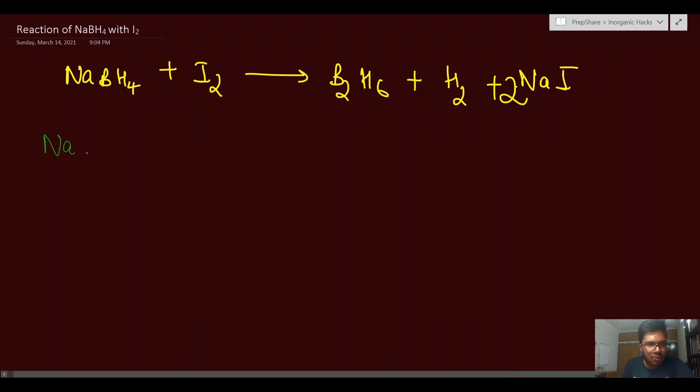This is the reaction. We will analyze NaBH4 first. NaBH4 is an ionic compound, right? You can think of it as Na+ and BH4-. BH4- can be thought of as BH3 coordinated to H-, right? So basically, we will think of it as Na+, BH3, and H-.